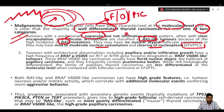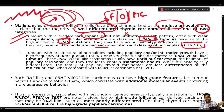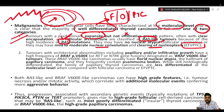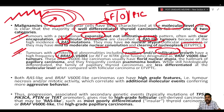The second group has architectural abnormalities including papillary and/or infiltrative growth, a high frequency of BRAF V600E mutations, and florid nuclear atypia — a hallmark of papillary carcinoma. They frequently contain psammoma bodies. While still histologically differentiated, the family of papillary thyroid carcinomas is less differentiated at the molecular level compared to follicular carcinoma or the encapsulated follicular variant.